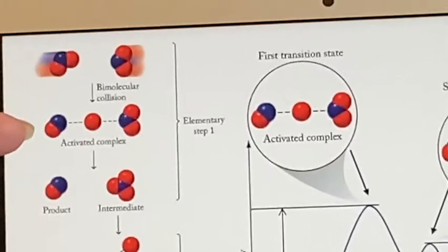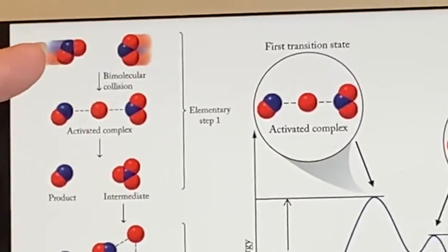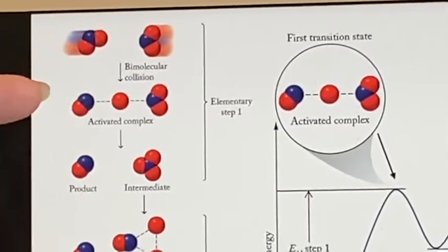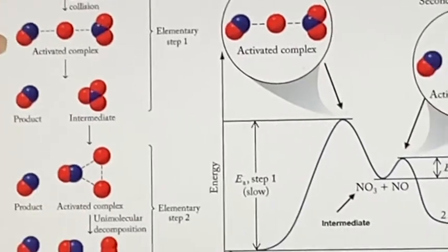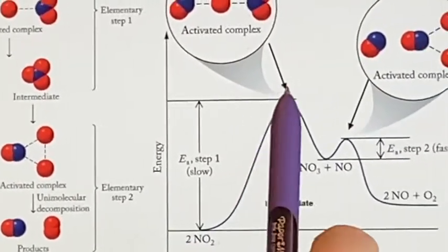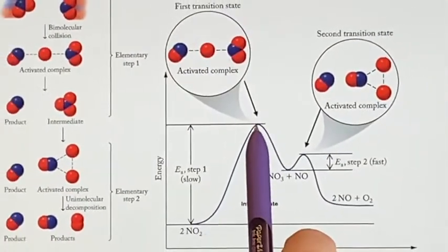Well, the step happens when we create an activated complex. When there was a collision and a bond was broken. The only way you can break a bond is to put a lot of energy into it. And so as far as the energy goes, it goes way up like this. This is your activation energy for the first step.